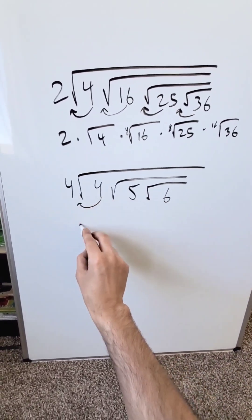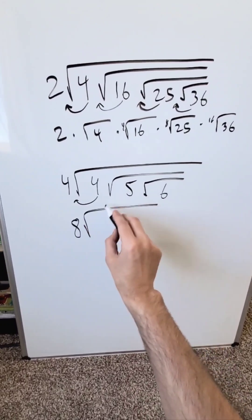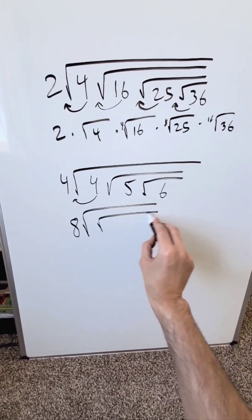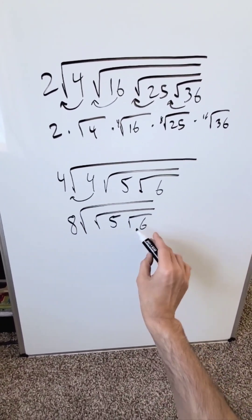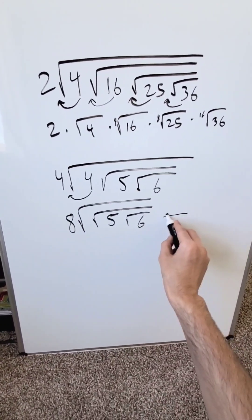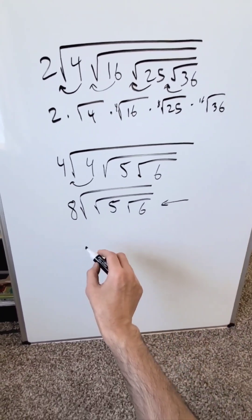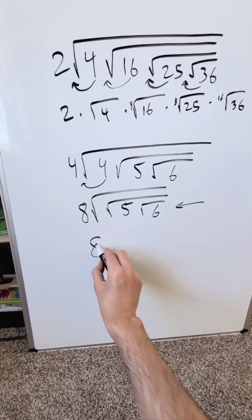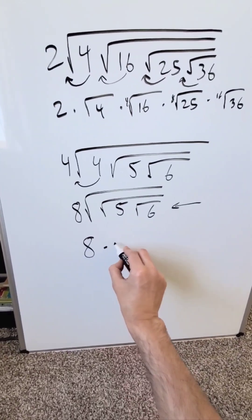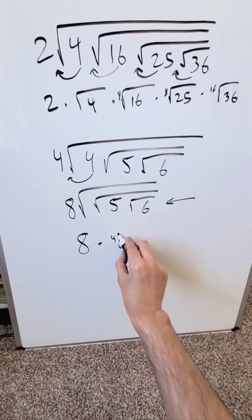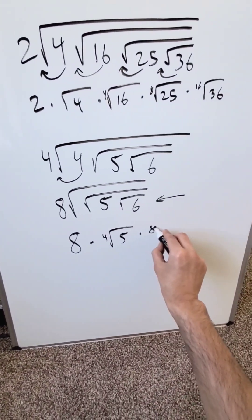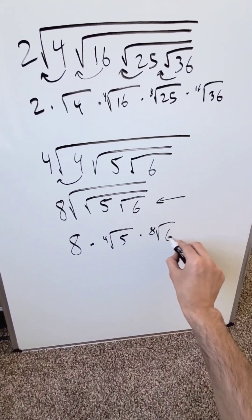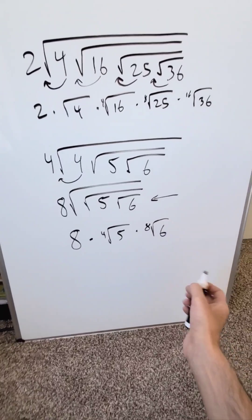2 times that 4 is 8. Then I have a root, but then I have this root of 5, and then a root of 6. This right here can be your answer, or you can present it as 8 times the 4th root of 5, times the 8th root of 6, and you're done.